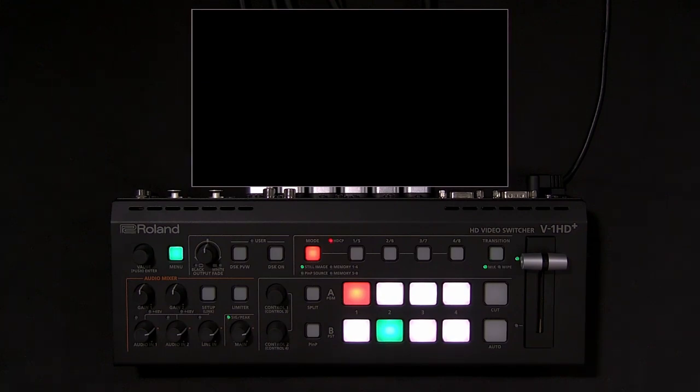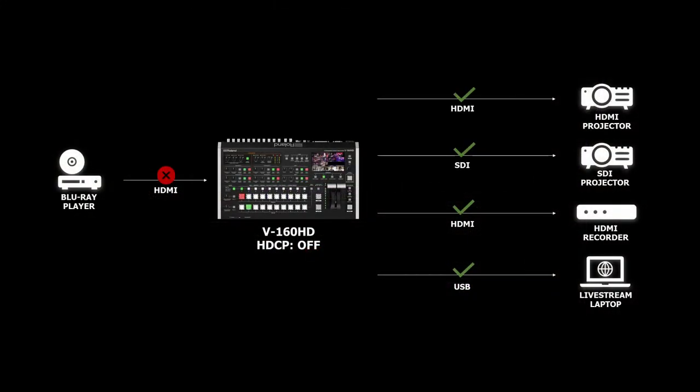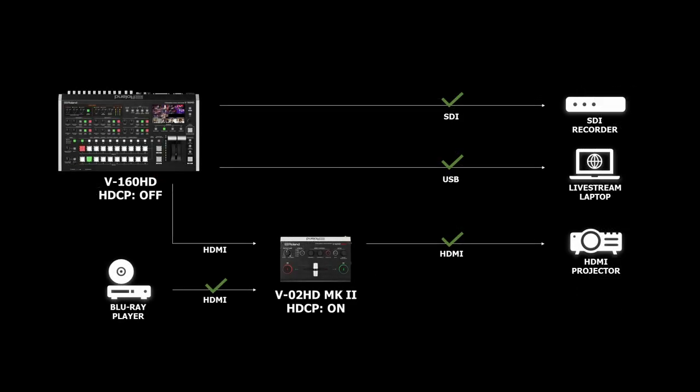If you need these disabled outputs, or you need to stream and record, then HDCP needs to remain off in the system menu, and you need to reroute the copy-protected source without using the Roland switcher.